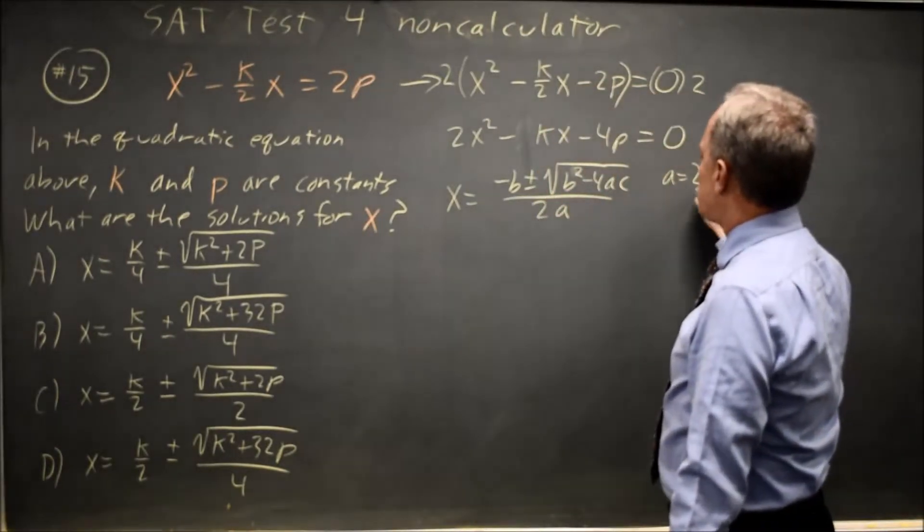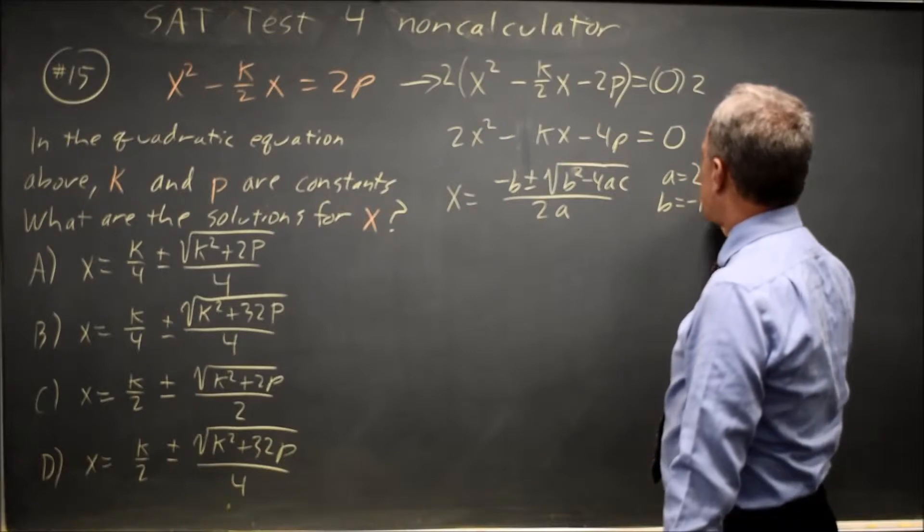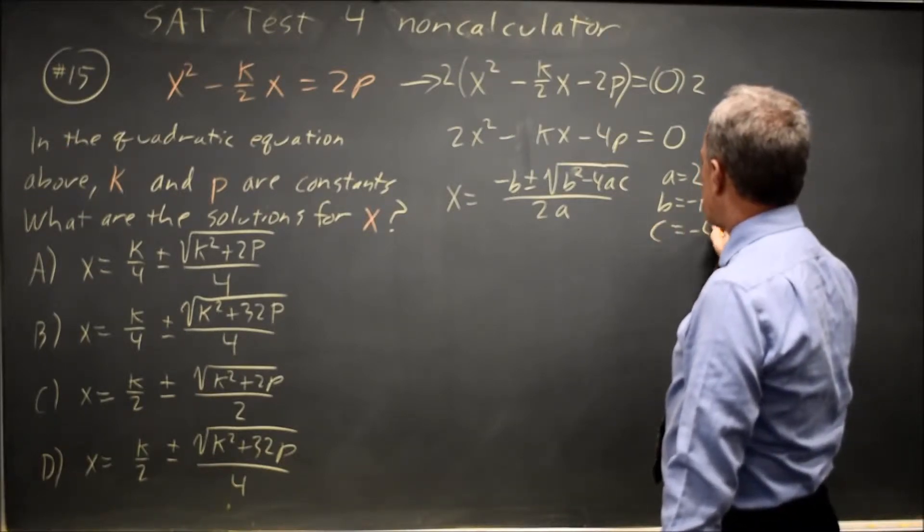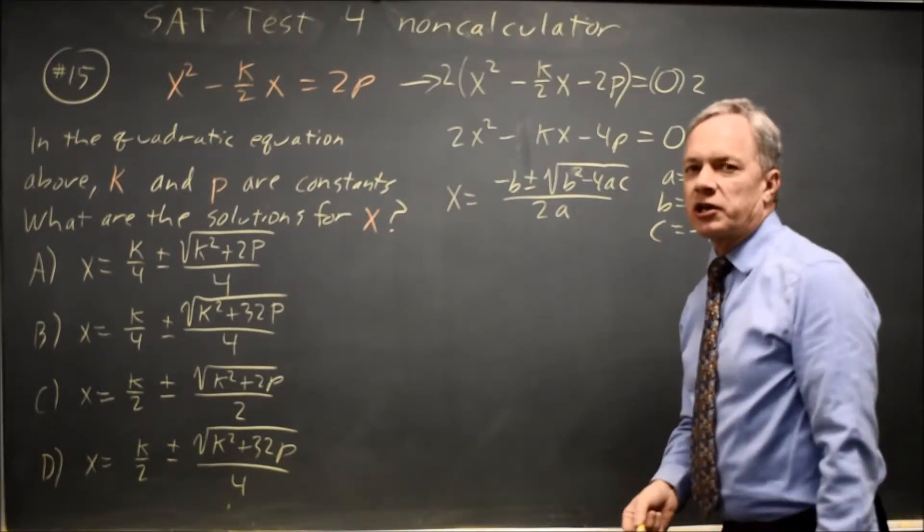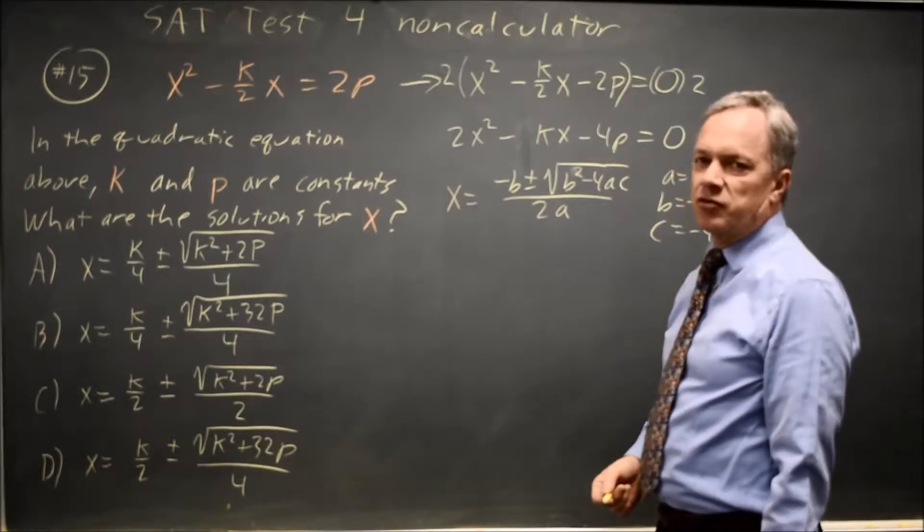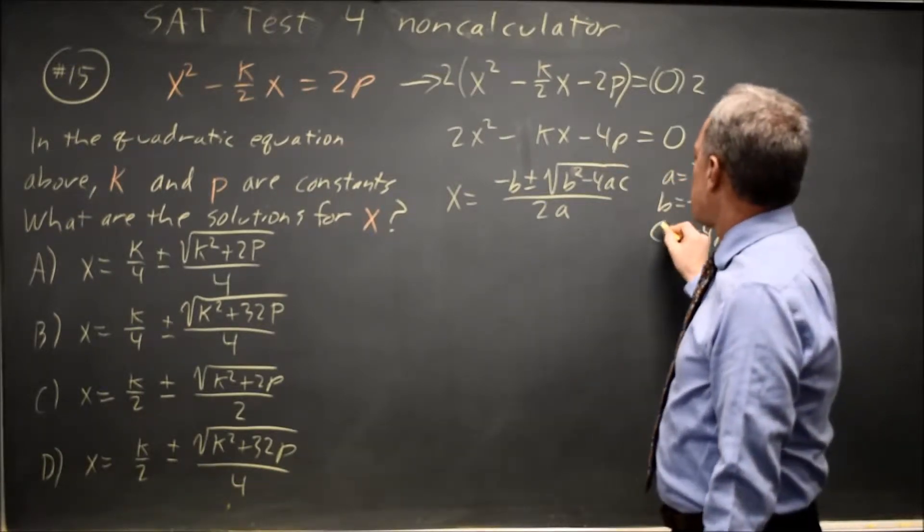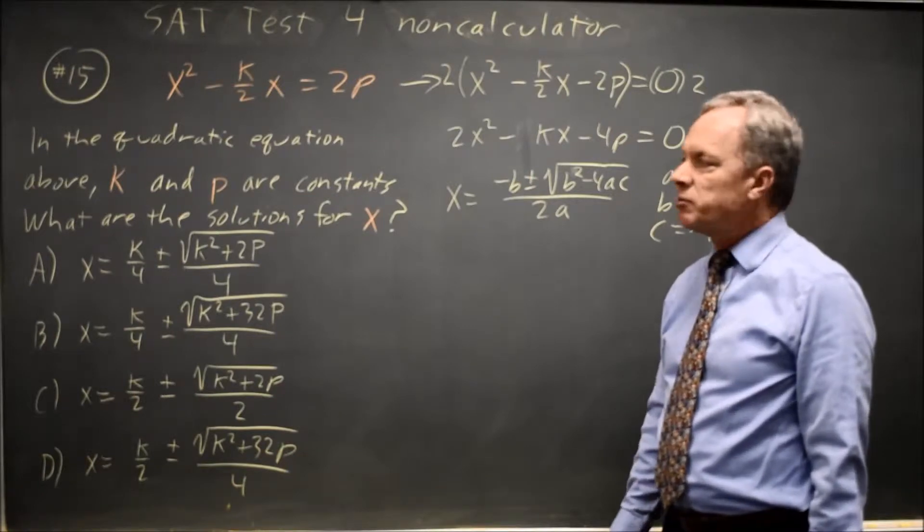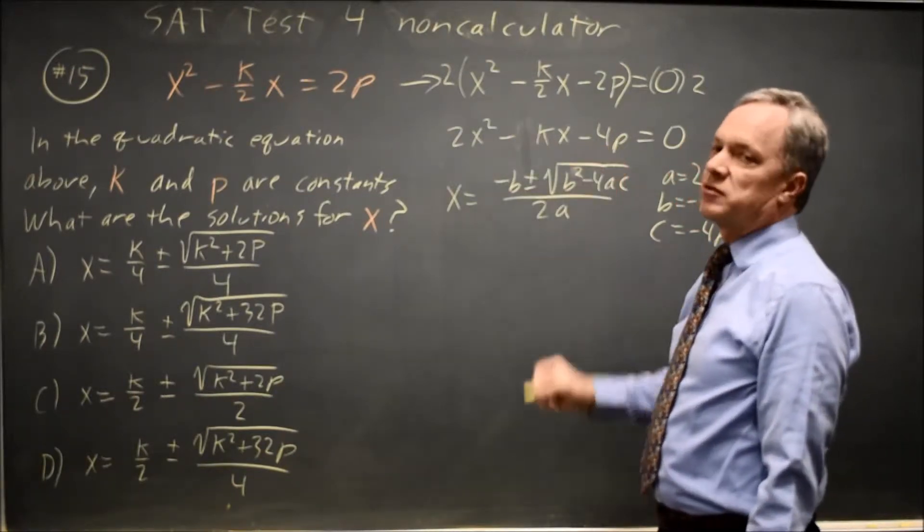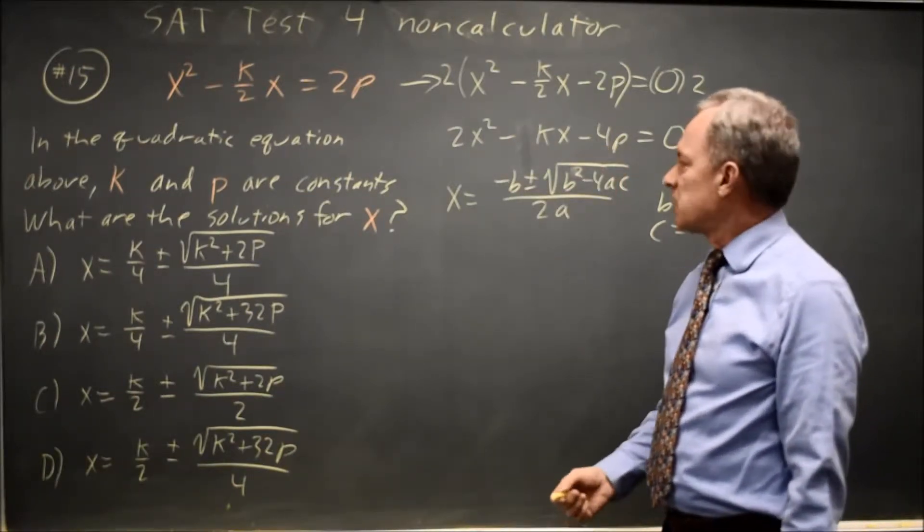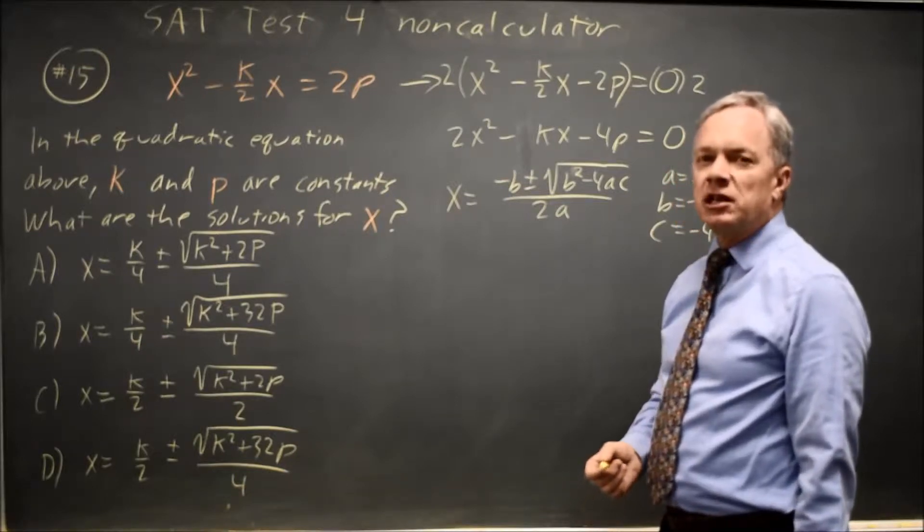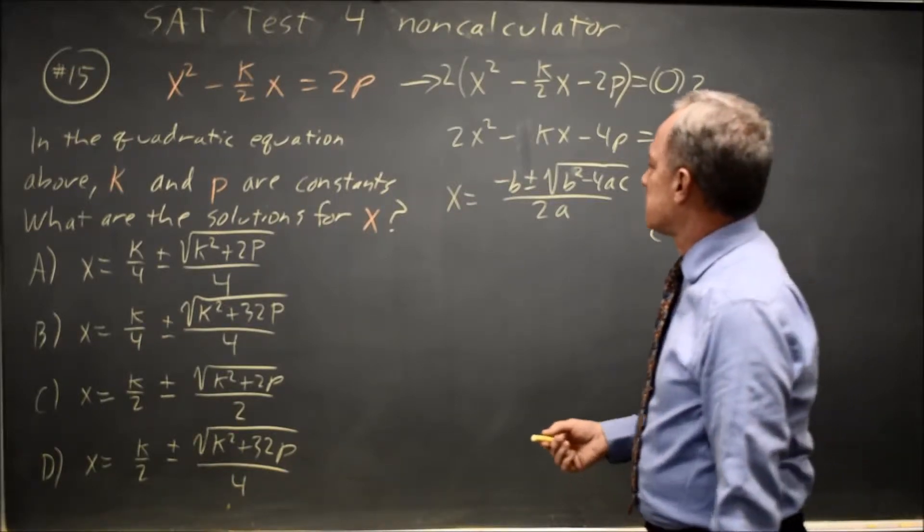where a equals 2, b equals negative k, and c equals negative 4p. I like to write out the quadratic formula, so I'm not inadvertently putting numbers in the wrong spot. I like to write out my a, b, and c for the same reason, but also so I don't drop these negatives. We're all good at dropping negatives, and any step you can take to reduce that risk is a good thing.